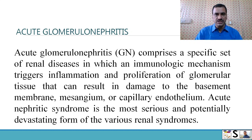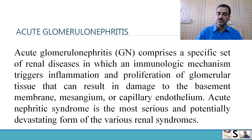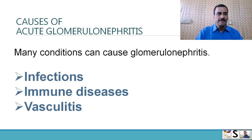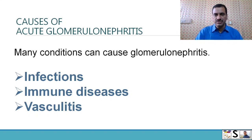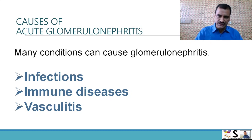Acute nephrotic syndrome is the most serious and potentially devastating form of various renal disorders. There are many conditions which can cause glomerulonephritis. We can divide them into three groups: infections, immune diseases, and vasculitis.